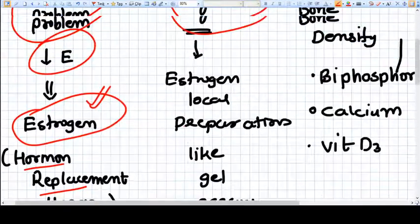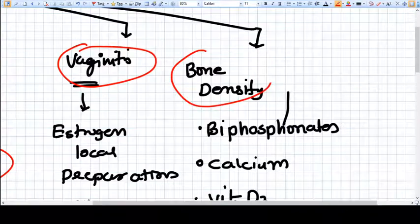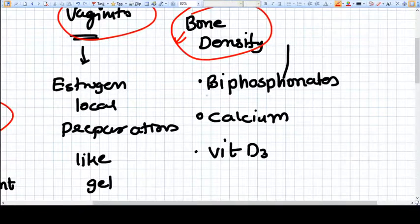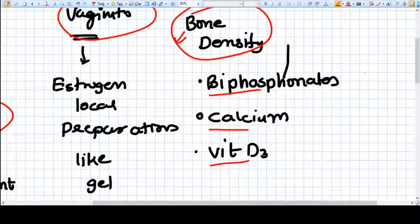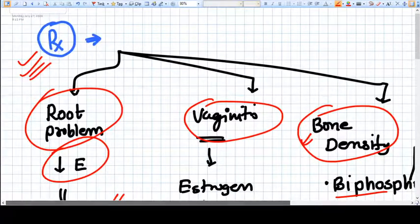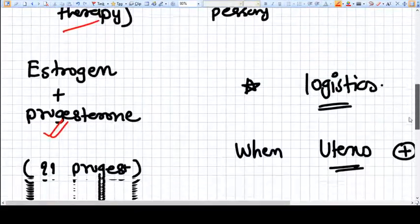The third very important aspect of menopause is bone density. We have decreased bone density in menopausal women, so we treat them with bisphosphonates, calcium, vitamin D3, all these preparations which increase absorption. There are other preparations also, but we're here talking only about the concepts.